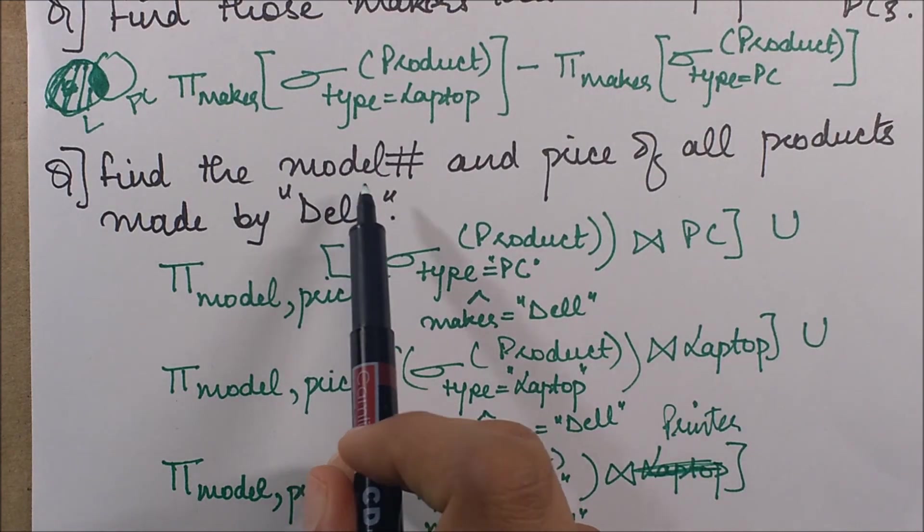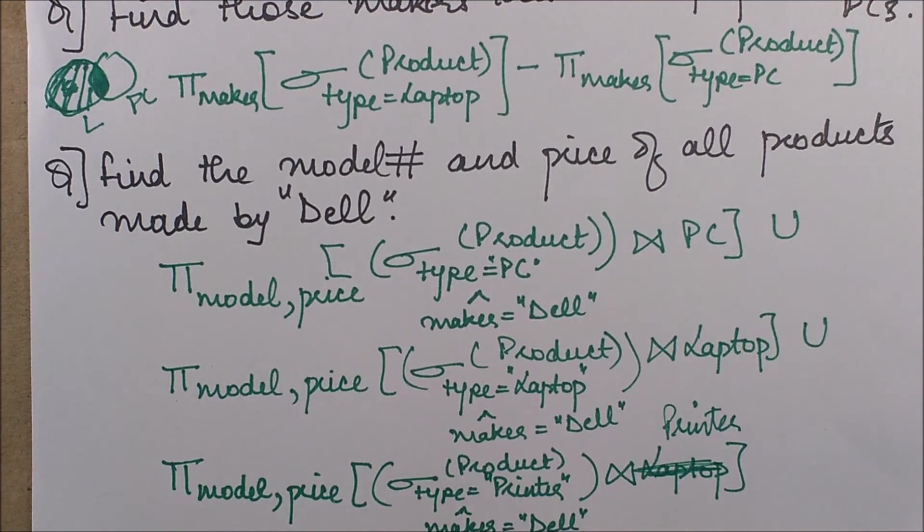We get their model number and price. So that's all for this query. In the next session, I'll be dealing with some more complex queries which will particularly deal with relational algebra product queries. So in case you are a bit weak in that topic, or you want some more questions to be practiced in that topic, please go through that one as well.